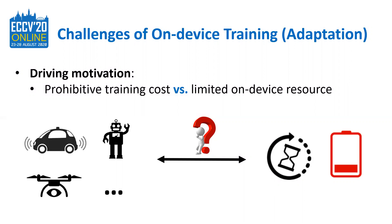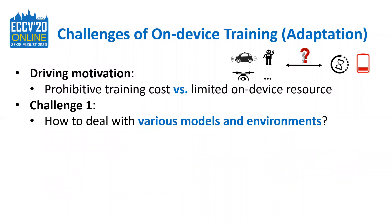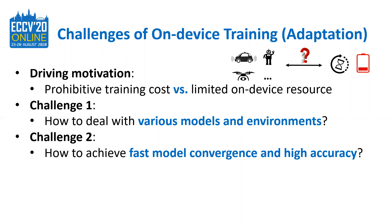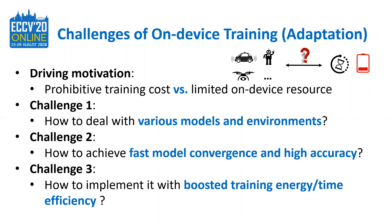Based on the driving motivation, in contrast to standard training, on-device training or adaptation needs to solve the following challenges. Challenge 1 is that there are various models and deployment environments, so how to deal with them with a general design — an automatic optimizer with a one-for-all feature is highly required. Challenge 2 is how to achieve faster model convergence and high accuracy given that limited data is available or can be stored on IoT devices. Challenge 3 is how to implement it with much boosted training energy or time efficiency for possibly wide adoption.